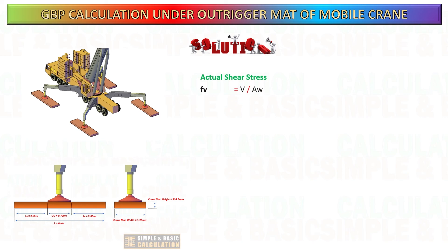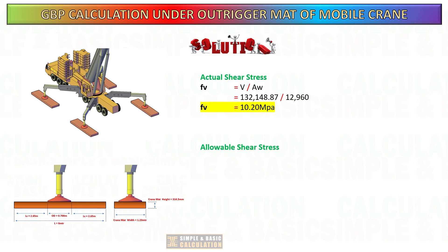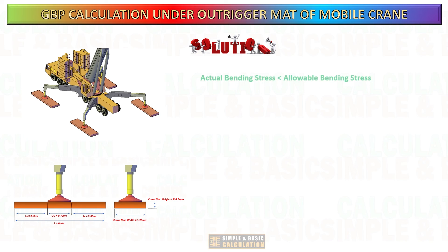Calculate the actual shear stress: shear on mat divided by the shear area of the mat. Next, calculate the allowable shear stress: the grade of steel multiplied by 0.4. This value depends on the grade of your steel — the strength of steel increases proportionally with the grade value.